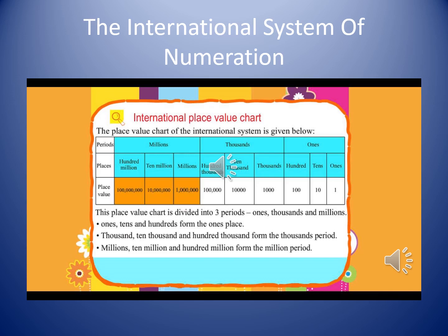In the thousands period, the places are thousands, ten thousands, and hundred thousands. In the millions period, the places are millions, ten millions, and hundred millions.